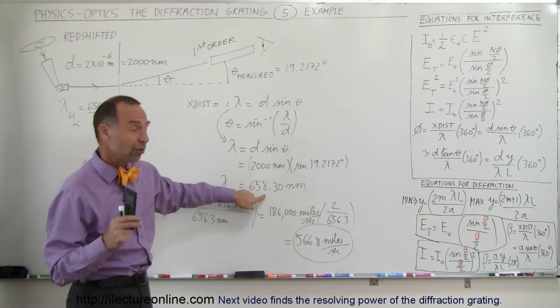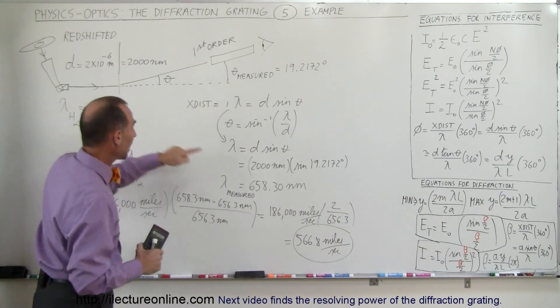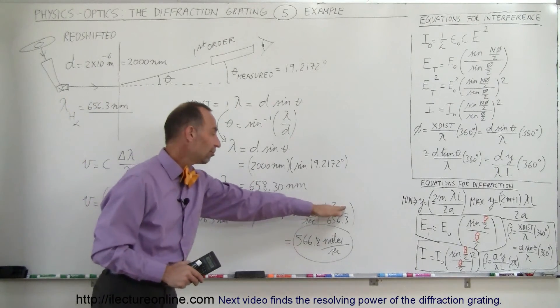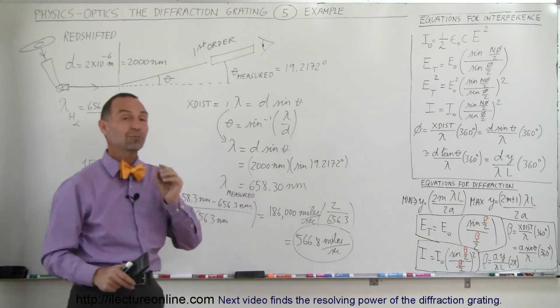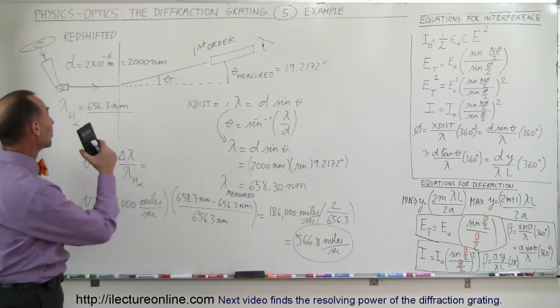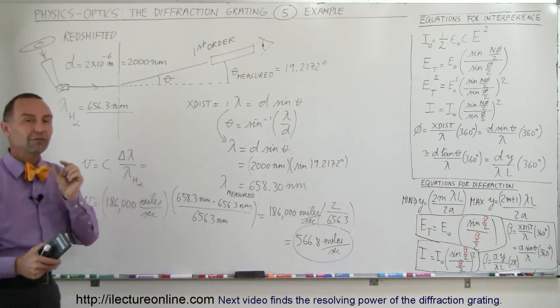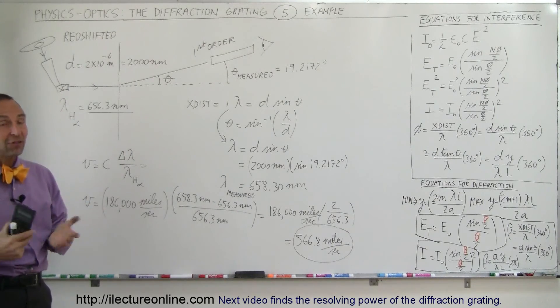We know that it's shifted. Notice that the shift is 2 nanometers. So therefore, we take the speed of light times the shift divided by the original wavelength if it's not moving. And we can calculate the speed of that receding galaxy, all because of the ability to separate the light to such fine angles using a very, very good diffraction grating. And that's the usefulness of diffraction grating.